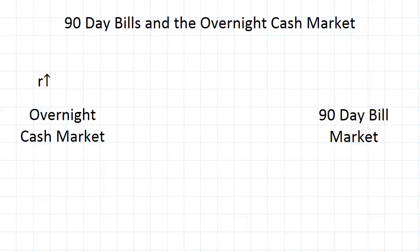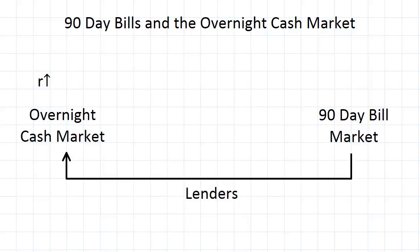One effect is that lenders are going to want to move from this market into the overnight cash market. This happens because for lenders a higher interest rate is good, so when they see interest rates going up in a different market, some of them are going to say: since there are now higher rates over there, I'm going to swap over and take advantage of that. So we've got lenders leaving one market to enter another.